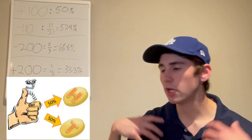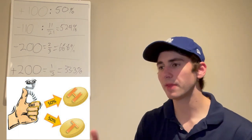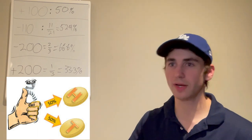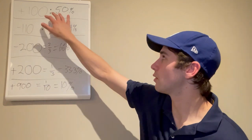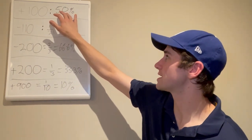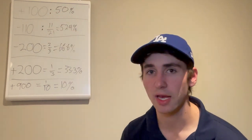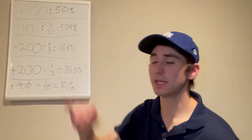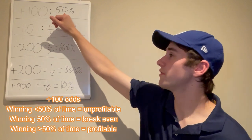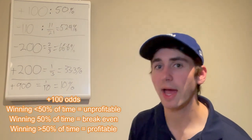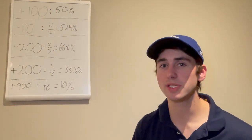If you flip a coin with your friend — you give him $100 if it's tails, he gives you $100 if it's heads — you could flip that coin all day long and the coin is going to land on heads 50% of the time, tails 50% of the time, and you will break even. So the key is realizing your break-even win probability for plus 100 odds is 50%. If you are winning plus 100 odds wagers more than 50% of the time, you are making money as a sports bettor. If you are winning less than 50% of the time, you are losing money.